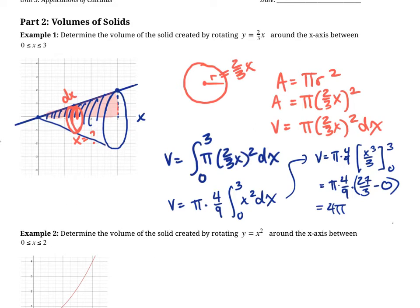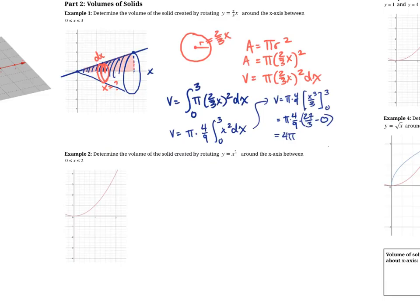We didn't need to use the cone volume formula — we did it strictly with calculus. Now I want you to pause the video and try the second question yourself. Try to visualize what the shape would look like if we revolve y = x² around the x-axis — I've graphed it for you. Try it yourself, and when you have an answer or get stuck, unpause to see what I got.